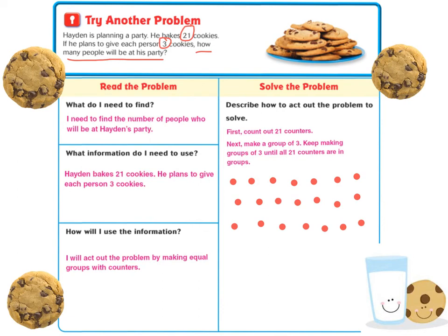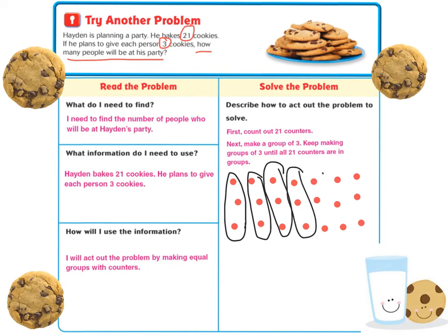Next, make a group of three. Keep making groups of three until all 21 counters are in groups: 1, 2, 3, 4, 5, 6, 7.